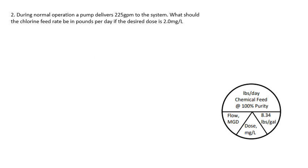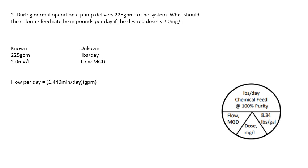During normal operation, a pump delivers 225 gallons per minute to the system. What should the chlorine feed rate be in pounds per day at the desired dose of 2.0 milligrams per liter? Start with your knowns and unknowns. We have 225 gallons per minute and a dose of 2.0 milligrams per liter. What we don't know is the pounds per day or the flow in million gallons per day. To solve for the flow per day: 1,440 minutes in a day times 225 gallons per minute gives a flow of 324,000 gallons per day.